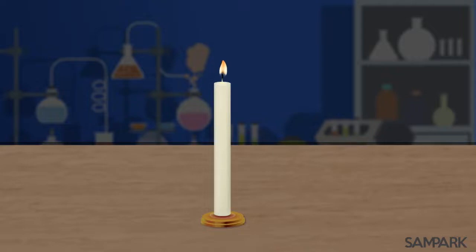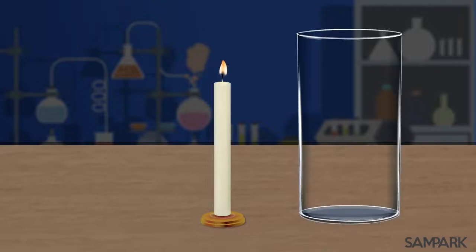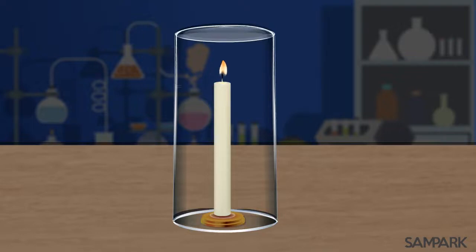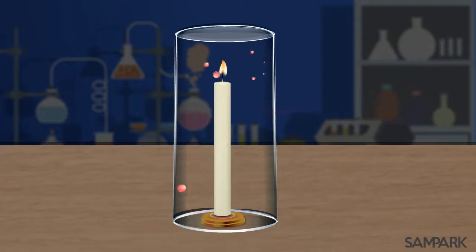अब मोमबत्ती को उल्टा कर इस तरह टेबल पर रखेंगे। देखो, अभी ये कितने अच्छे से जल रही है। अब इस काँच के गिलास को इस मोमबत्ती पर उल्टा करके रख देते हैं। अब ध्यान से मोमबत्ती को देखना — अरे देखो, मोमबत्ती तो बुझ गई! ऐसा क्यों हुआ? जब मैंने गिलास को उल्टा करके रखा, तब गिलास के अंदर कुछ हवा थी — मतलब हवा में मिली हुई कुछ ऑक्सीजन थी, जिसका उपयोग करके मोमबत्ती जलती रही। जैसे ही वो ऑक्सीजन खत्म हुई, मोमबत्ती बुझ गई।